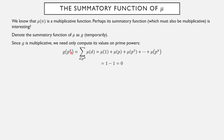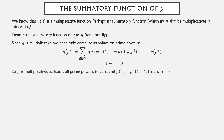If k is zero and you're actually just computing g of 1, you'll only have the µ(1) term, which equals 1. So g is multiplicative, evaluates all prime powers to zero, and g(1) = 1. Therefore g evaluates 1 to 1 and everything else to zero — it is the epsilon function ε that we've seen before.